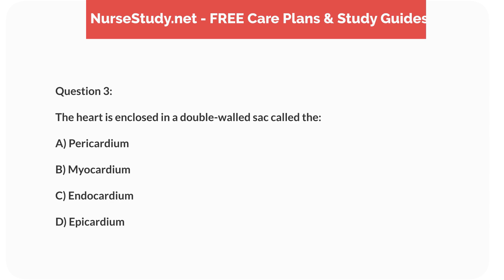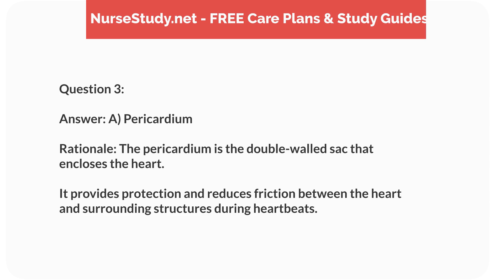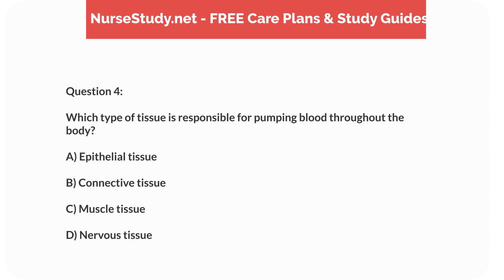It also plays roles in blood cell production and mineral storage. Question 3: The heart is enclosed in a double-walled sac called the A) pericardium, B) myocardium, C) endocardium, D) epicardium. Answer: A, pericardium. Rationale: The pericardium is the double-walled sac that encloses the heart; it provides protection and reduces friction between the heart and surrounding structures during heartbeats.